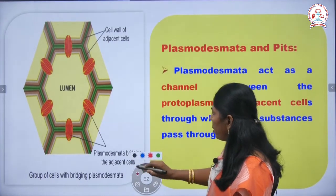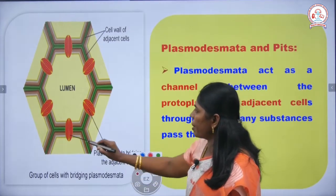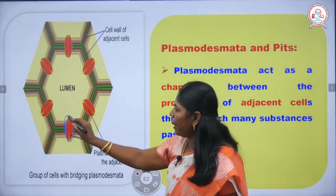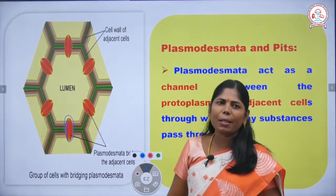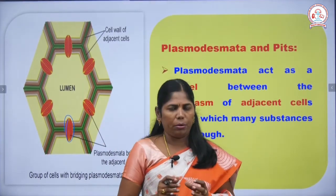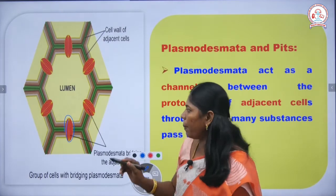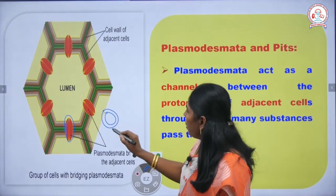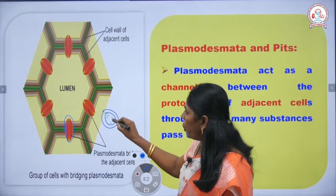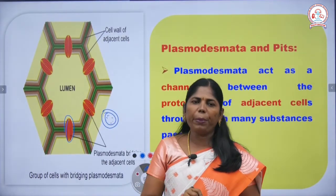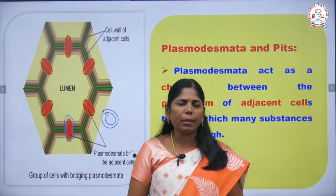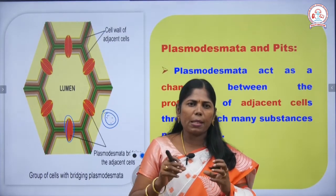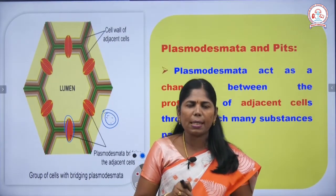Plasmodesmata are otherwise known as pits. Each pit consists of a pit chamber. Inside the pit chamber, there are small pores on the membrane. The pit chamber consists of pores through which protoplasm can be exchanged from one cell to another.